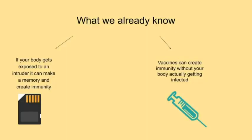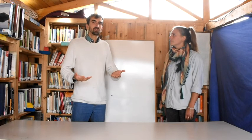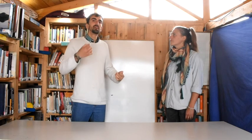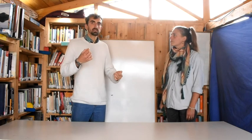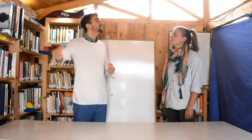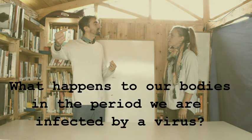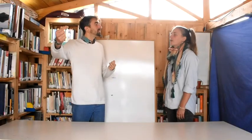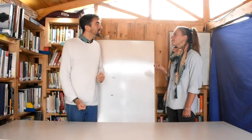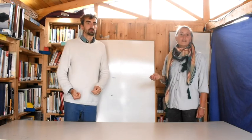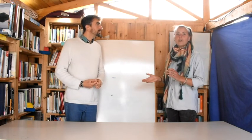If your body gets exposed to an intruder, it can make a memory and create immunity. Vaccines can create immunity without your body actually getting infected. But what actually happens since the moment a virus starts trying to attack us until we actually get rid of it? Maybe to understand this better, let's look at the different phases of a disease.